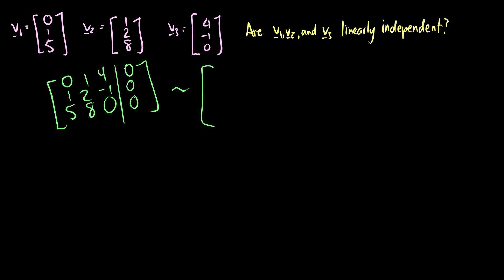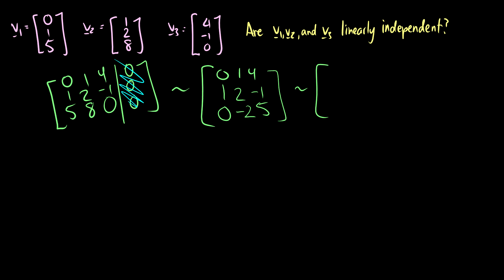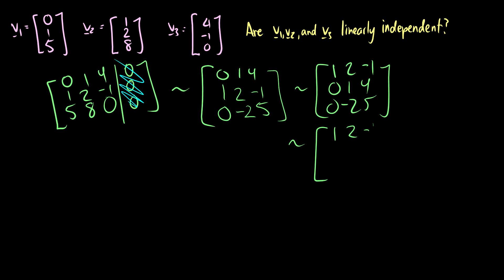Performing row operations: keep the first row (0, 1, 4); subtract 5 times the second row from the third to get (0, -2, 5); then swap rows to put (1, 2, -1) on top, then (0, 1, 4), then (0, -2, 5). Add 2 times the second row to the third to get (0, 0, 13). There is no free variable, so these vectors are linearly independent.